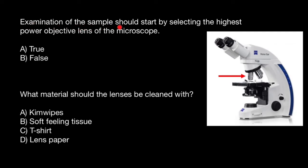Examination of the sample should start by selecting the highest power objective lens of the microscope. Is it true or false? It is a false statement because we should use the lowest power objective lenses when we start working with a sample, and then we can switch to high power objective lenses followed by fine adjustment. So this is a false statement.